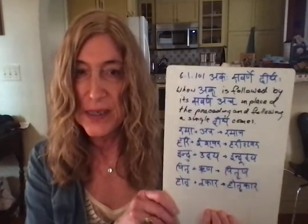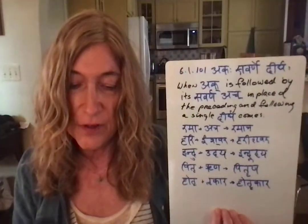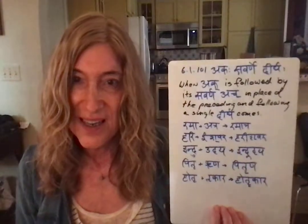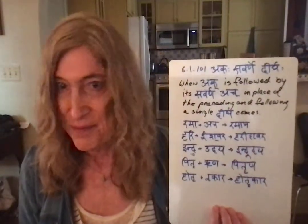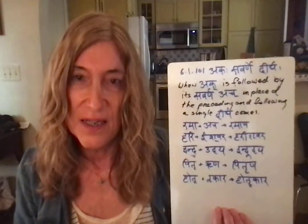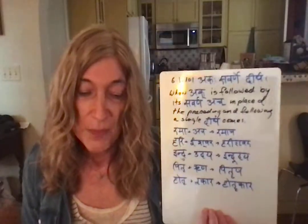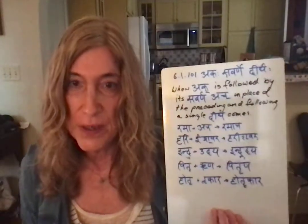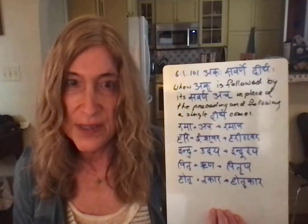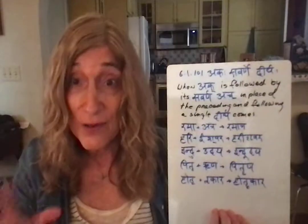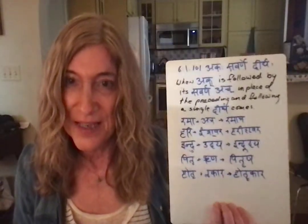For some pretty simple examples of that, we'll look at a sutra that involves the substitution of a vowel by a single dirgha vowel: 6.1.101, akasavarne dirgaha — akaha sthanintharatamaha, savarne dirgaha syad. When ak is followed not just by any vowel, but a savarna vowel, the preceding and following combine into a single dirgha. That's why this is fun to remember.